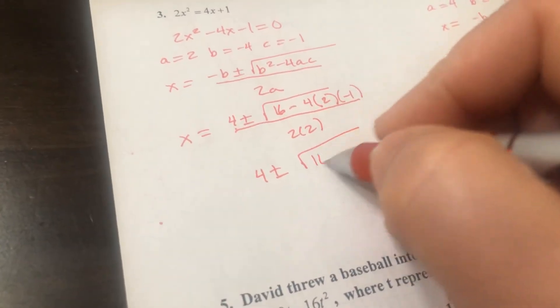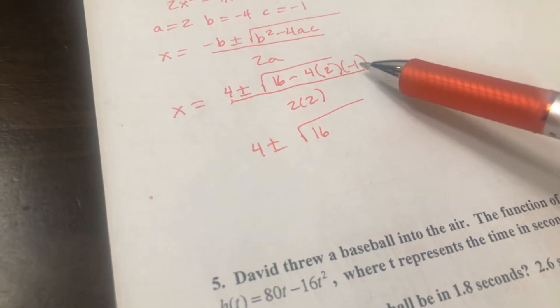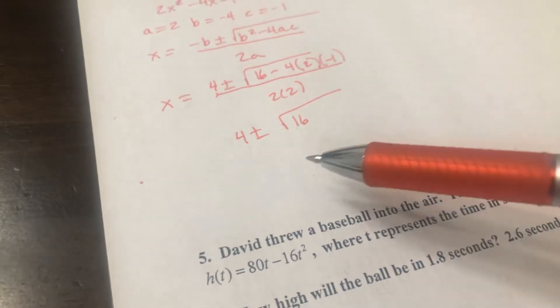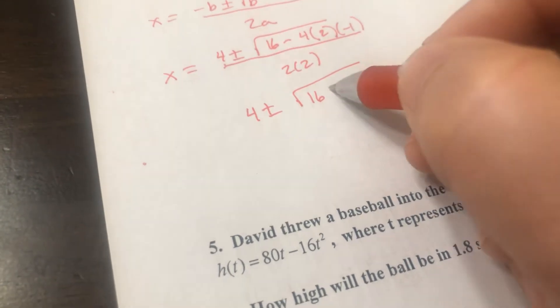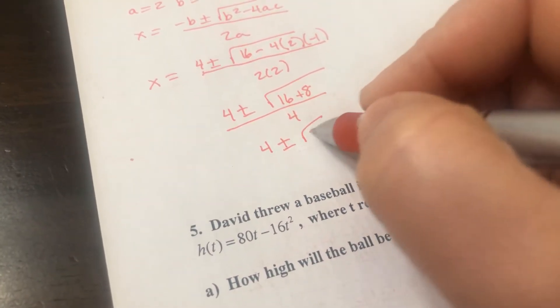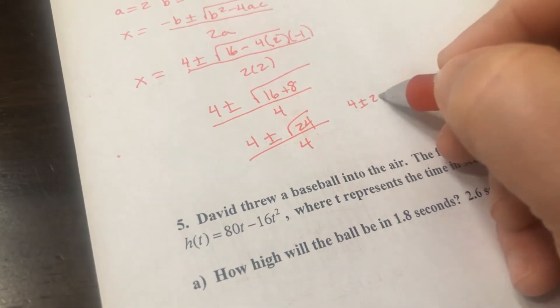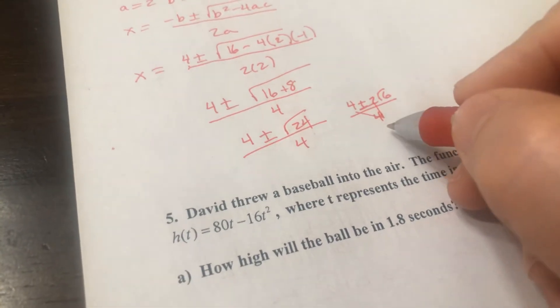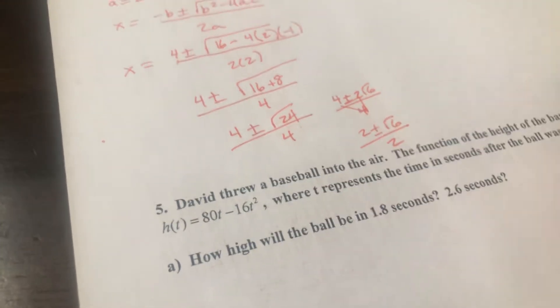All right, now here comes the most common mistake made on the quadratic formula. So 4 times 2 is 8. But the most common mistake people make is they put 16 minus 8. But see these two negative signs makes it 16 plus 8 all over 4. So that's 4 plus or minus the square root of 24 all over 4. The square root of 24 breaks down into 2√6. And then we can reduce them all by 2, and we get 2 ± √6 all over 2.